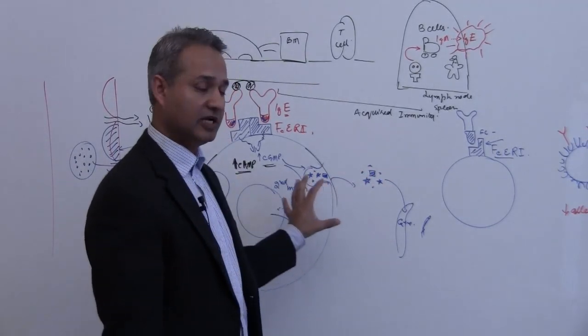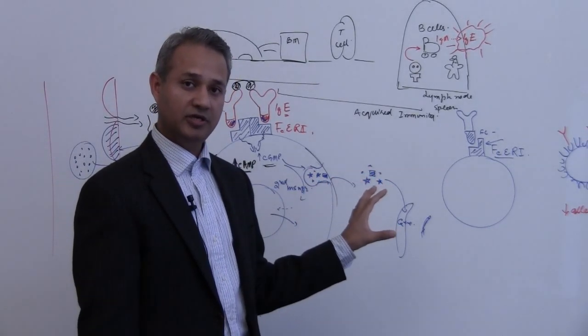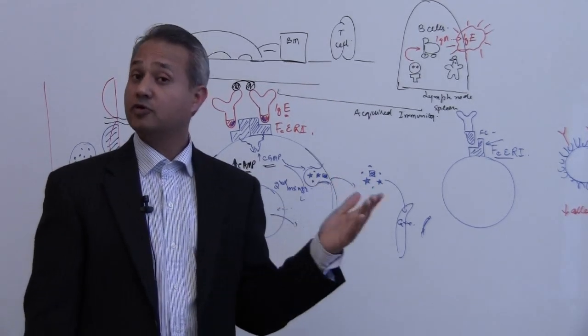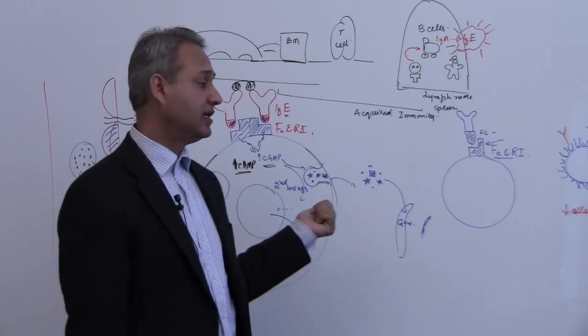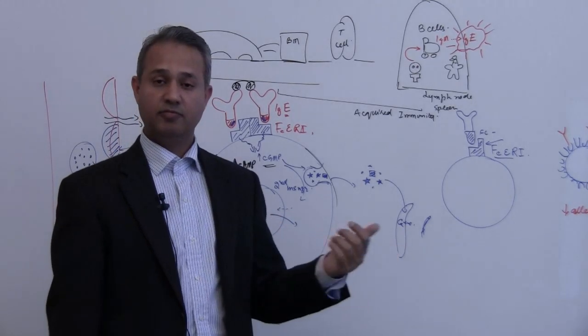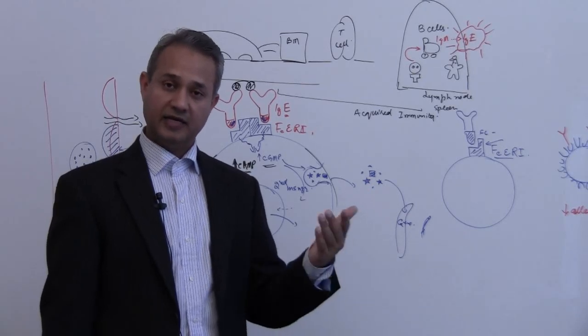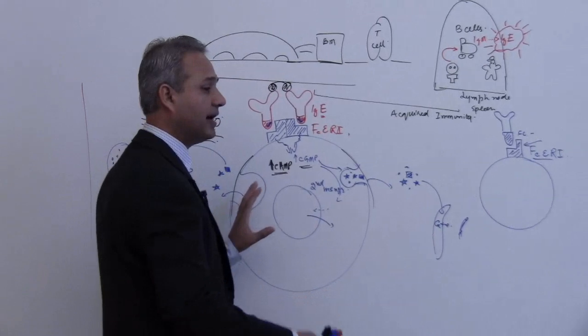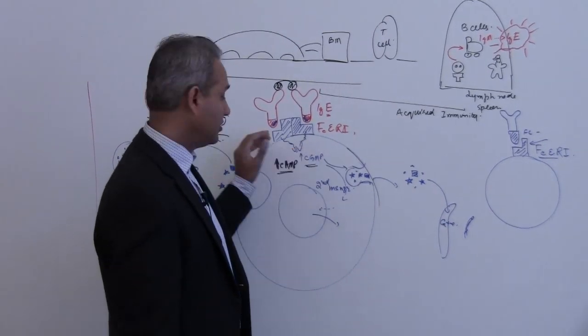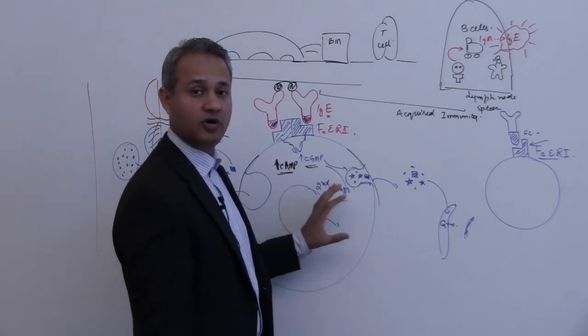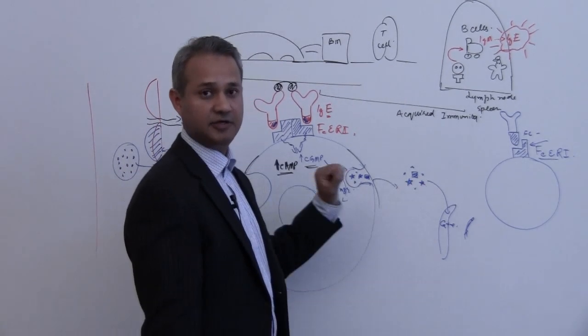Sometimes it is localized, annoying disturbance. Some people don't even have that. Then in some unfortunate cases this can actually become much more stronger and can cause severe effects. I hope you understand how IgE would prime the mast cell to cause the degranulation and the effect.